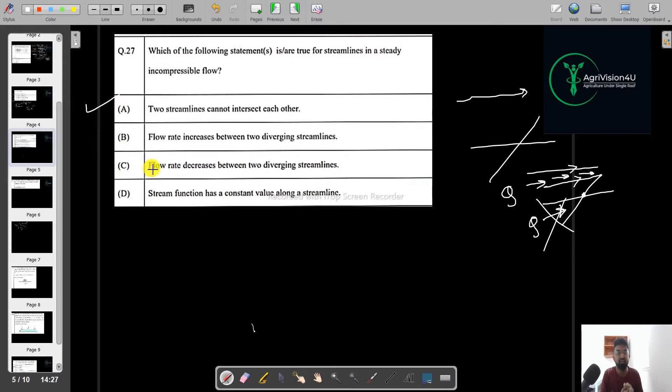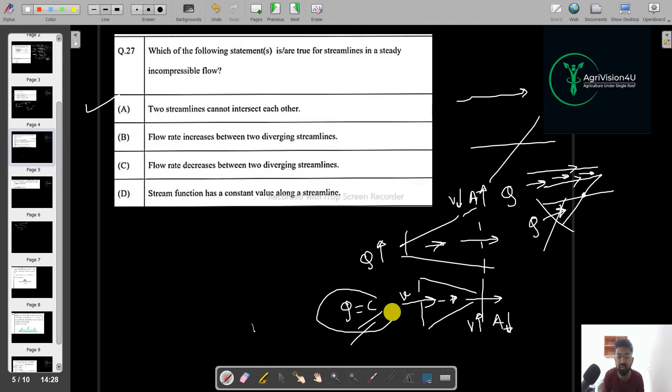Now we will talk about the second flow rate increases between the two diverging streamlines. So if you have two diverging streamlines, then the flow rate increases. But I don't think this is true because even if it is diverging or whether it is converging, flow should always remain constant. The only change will be there in the velocity. In this case here, as the flow proceeds, the velocity will increase since the area is decreasing. And in this case, the velocity should decrease since the area is increasing.